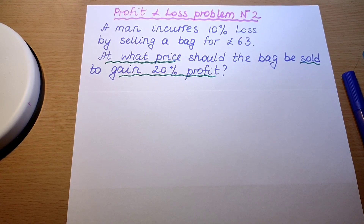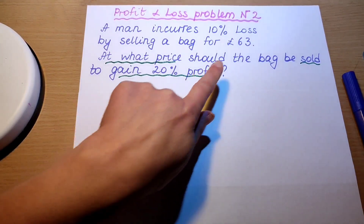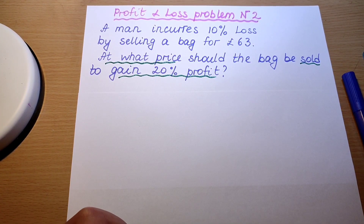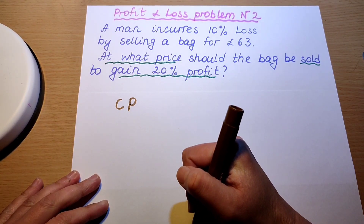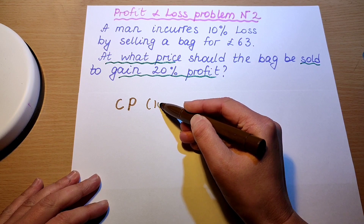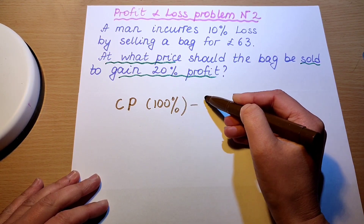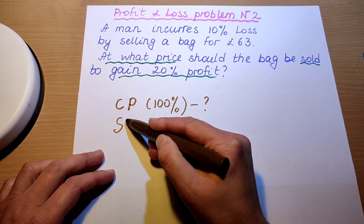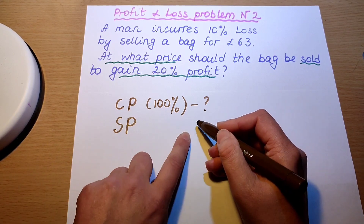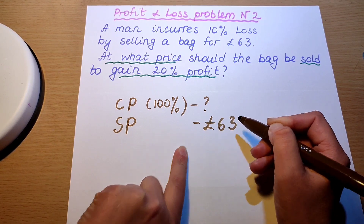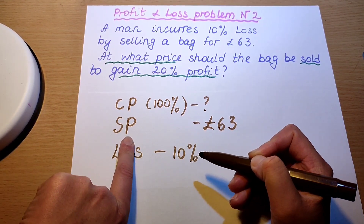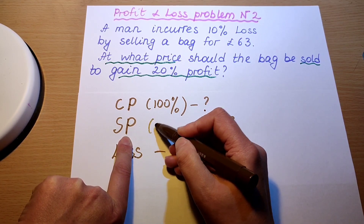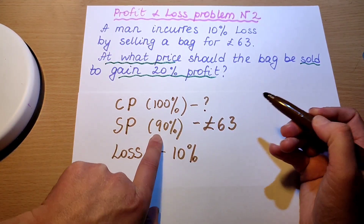Profit and loss problem number two: a man incurs 10 percent loss by selling a bag for 63 pounds. At what price should the bag be sold to gain 20 percent profit? We don't know the cost price yet but we know cost price is always 100 percent. We know the selling price is 63 pounds. We also know the loss was 10 percent, which means the percentage of the selling price is 90 percent — 100 percent take away 10 percent.